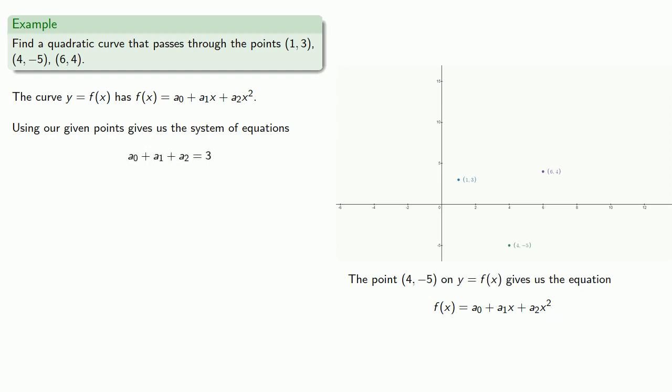Our second point, (4, -5), on y equals f(x). If x equals 4, then our function value equals -5. And this gives us a second equation.